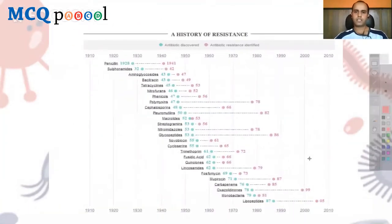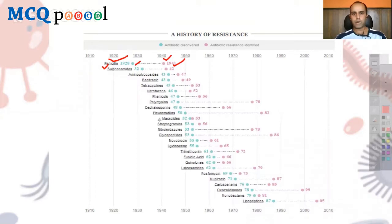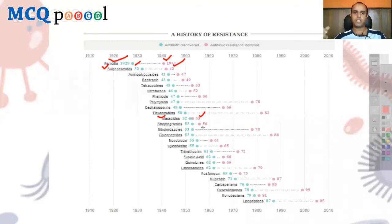A chart shows when different drugs were discovered and how long it took for resistance to emerge. Penicillin was discovered in 1928–29 and entered clinical use in 1940, but resistance emerged as early as 1941. Sulfonamides (Prontosil) were discovered in 1932 and resistance appeared by 1942. Macrolides were discovered in 1952 and resistance appeared by 1953 — showing resistance develops very, very fast, as microbes mutate and grow rapidly.